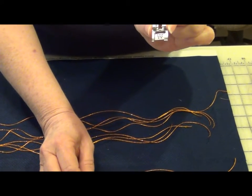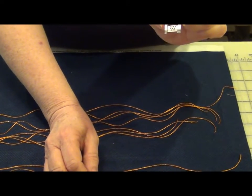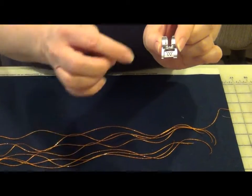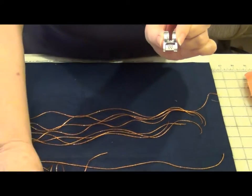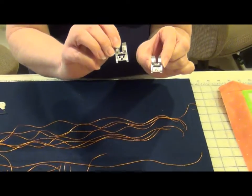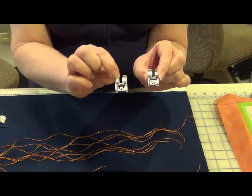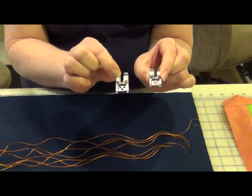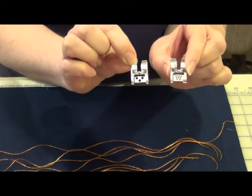Now if you have cording that's a little bit bigger than this and you find it won't feed, you can't load it through those holes, an alternate version of this foot is also this three hole. It's called a three hole yarn foot but it works on the very same principle.